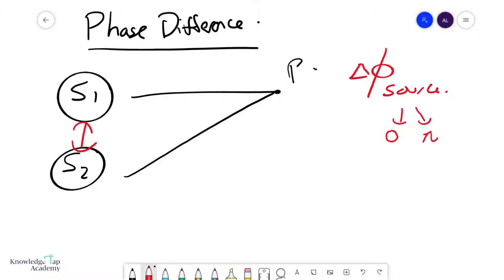But of course, the phase difference between these sources could be any value. But in the A-levels, it's typically in phase or in antiphase. So that's the first thing that affects your phase difference at a point.